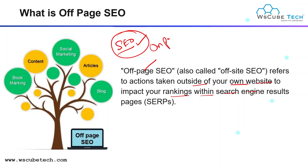On-page SEO is known as on-site SEO, in which you can perform every activity on the website page, like your title, meta description, everything on your page. But in the case of off-page SEO, as its name shows, you can do every activity off-site.